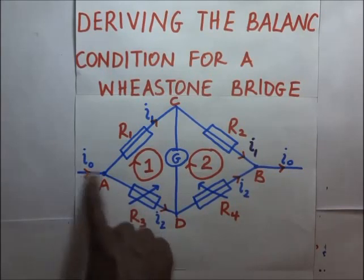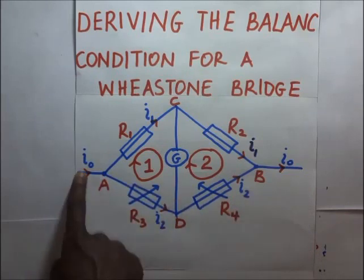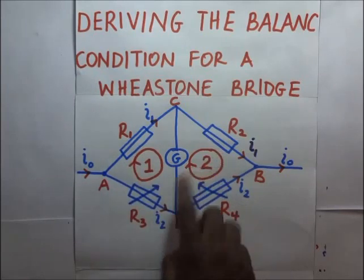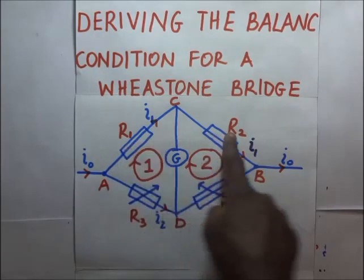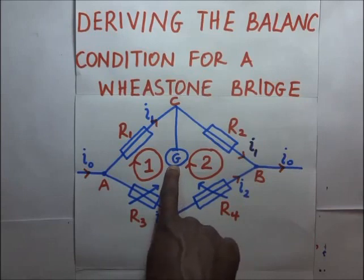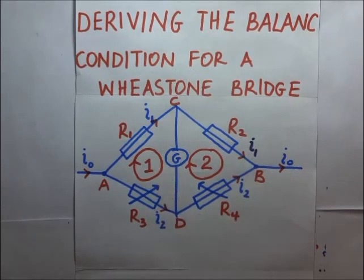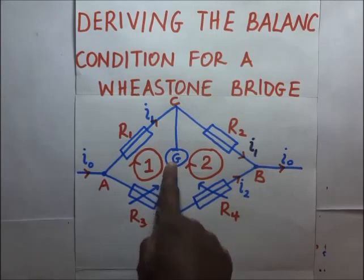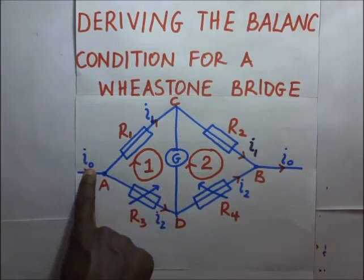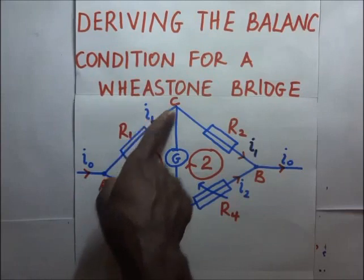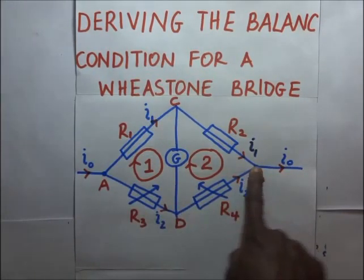In this circuit diagram of the Wheatstone bridge, we have a first loop and a second loop, containing resistances R1, R2, R3, R4, and a galvanometer G. For balance condition, no current flows through the galvanometer. The total current I0 enters the bridge, splits into I1 and I2 at the junction, and recombines back to I0 at the other end.